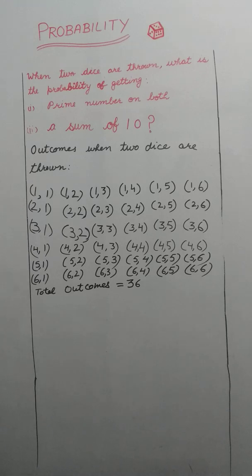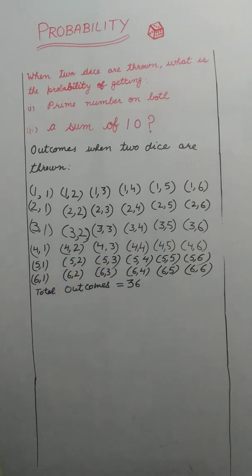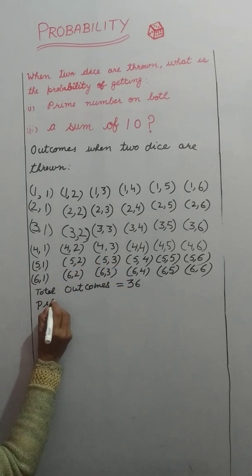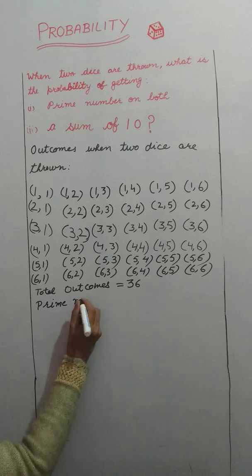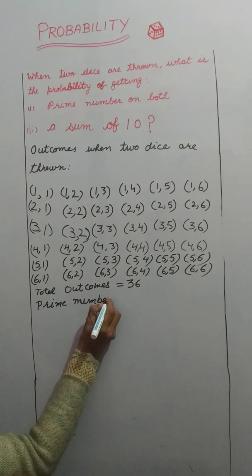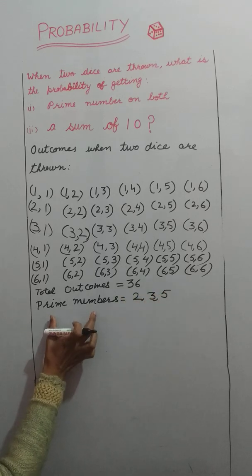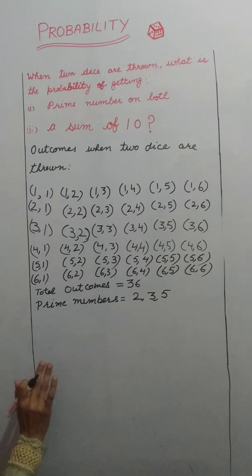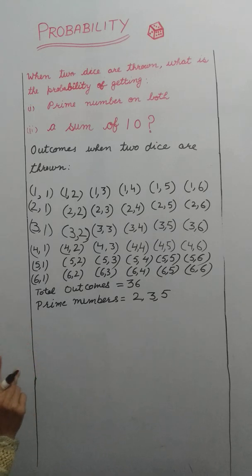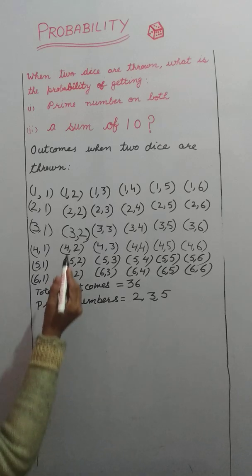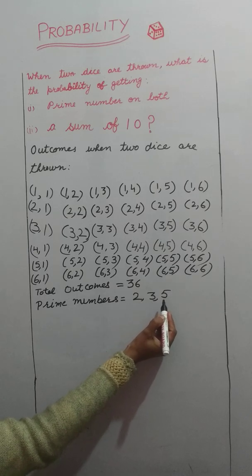Now we have to find the probability of getting prime numbers on both dice. Prime numbers are those numbers which are divisible only by 1 and the number itself — they have only two factors. Among the outcomes 1, 2, 3, 4, 5, and 6, the prime numbers are 2, 3, and 5.